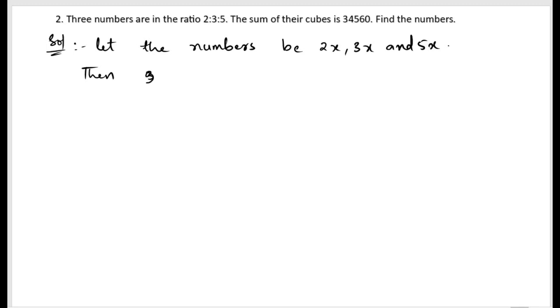Then we will get the cubes. So we need to do the cubes of the given numbers. The 2x cube plus 3x cube plus 5x cube equals 34560. Now the cube of 2 is 8 and the cube of x is x cube. The cube of 3 is 27 x cube, plus 5 cube is 125 x cube equals 34560.